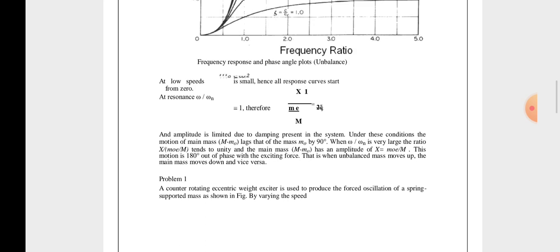And m0 lags by 90 degrees. When ω/ωn is very large, the ratio X/(m0 e/M) tends to unity, the mass unit. Main mass has amplitude X equals m0 e/capital M. The motion is 180 degrees out of phase with the exciting force. That is when unbalanced mass moves, it means remains constant motion.